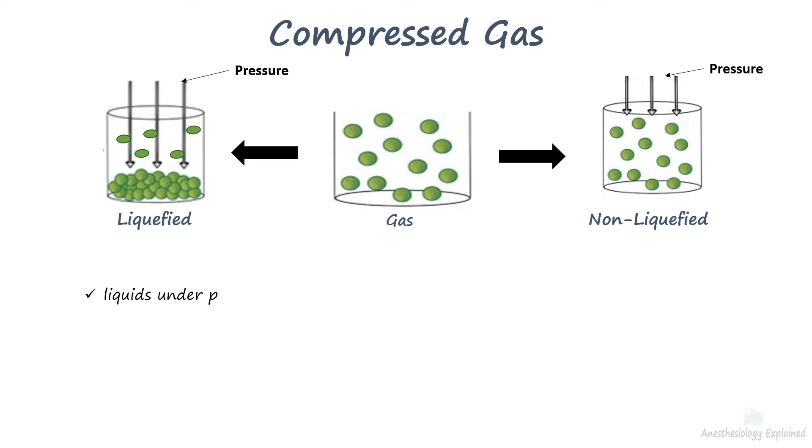Liquefied gases are gases that can become liquids at normal temperatures when they are inside cylinders under pressure. They exist inside the cylinder in a liquid vapor balance or equilibrium. As gas is removed from the cylinder, enough liquid evaporates to replace it, keeping the pressure in the cylinder constant. Examples are nitrous oxide and carbon dioxide.